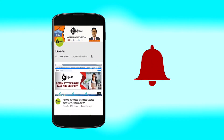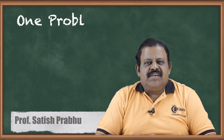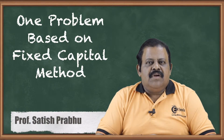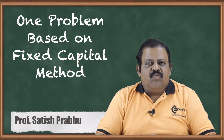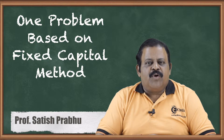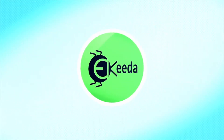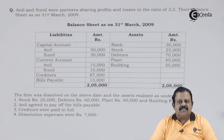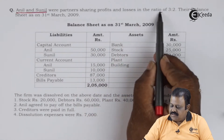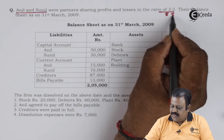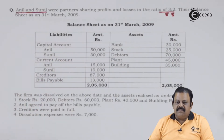When a partnership firm adopts the fixed capital method, we have both partners' capital accounts as well as current accounts. When solving a problem on dissolution of partnership firm and we come across this situation, we need to understand the complete accounting procedure. Anil and Sunil were partners sharing profits and losses in the ratio of 3:2, that is three-fifth and two-fifth. Their balance sheet as on 31st March 2009 is as under.